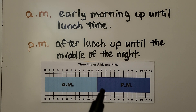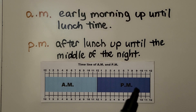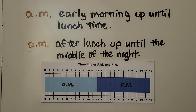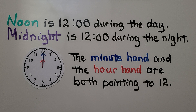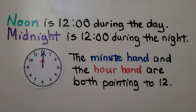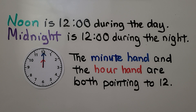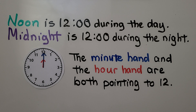PM is after lunch up until the middle of the night. Noon is 12 o'clock during the day, and midnight is 12 o'clock during the night. The minute hand and the hour hand are both pointing to 12 at noon and at midnight.